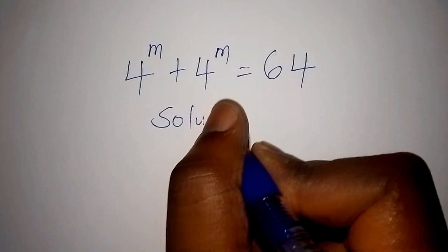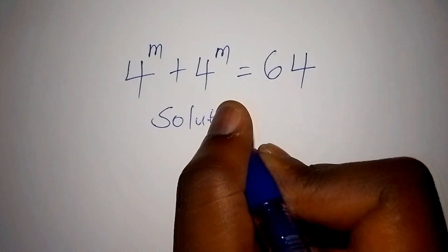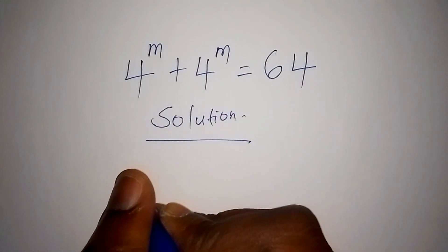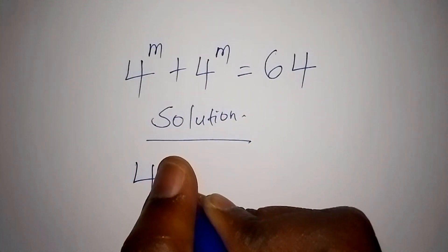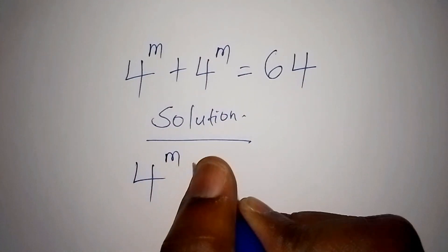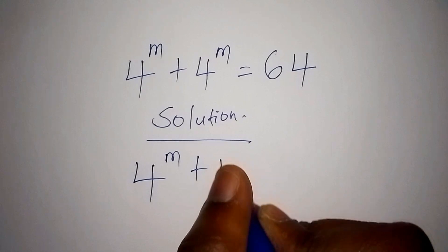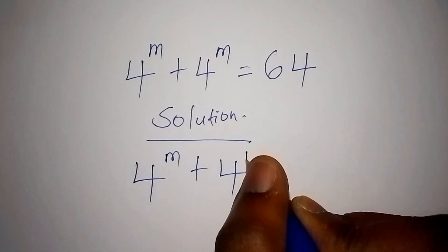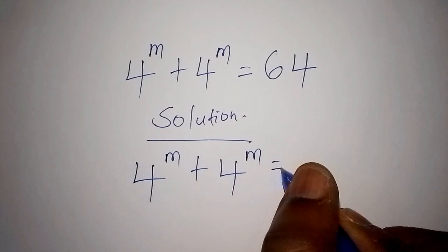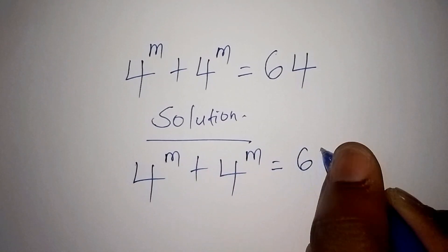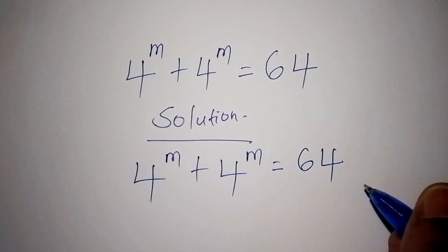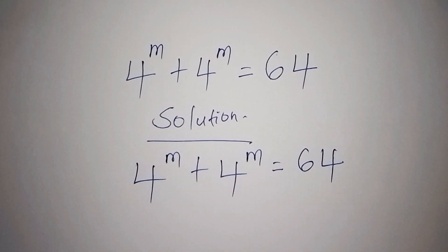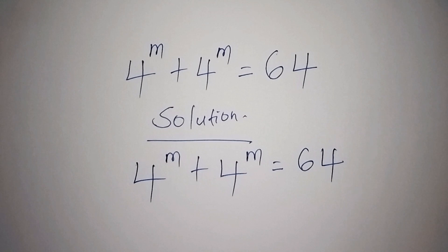On our solution, we have 4 to the power of m plus 4 to the power of m equals 64. In this case we are trying to find out the value for m.